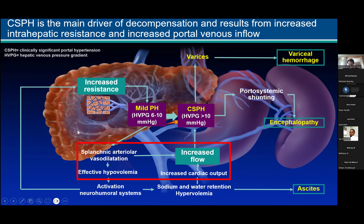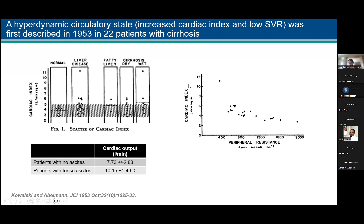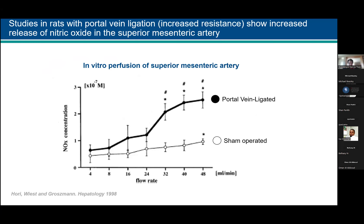In regards to this talk, let's focus on this increased cardiac output and high output state. This was described a long time ago in 22 patients with cirrhosis. You can see how the cardiac index was increasingly elevated, especially in what they called wet cirrhosis — patients with ascites had a much higher cardiac output compared to those without. There was an indirect correlation between the cardiac index and vasodilation: the more vasodilated the patient, the higher the cardiac index. They also noted a high incidence of QT prolongation.